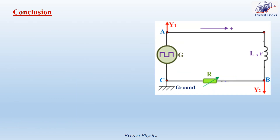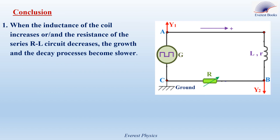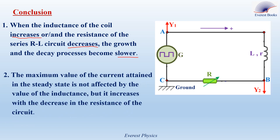Conclusion: When the inductance of the coil increases, or the resistance of the series R-L circuit decreases, the growth and decay process becomes slower. The maximum value of the current attained in the steady state is not affected by the value of the inductance, but it increases with the decrease in the resistance of the circuit.